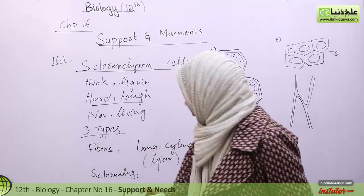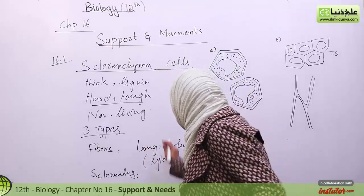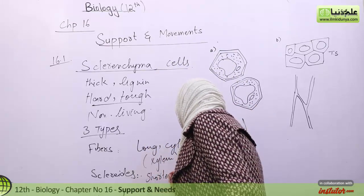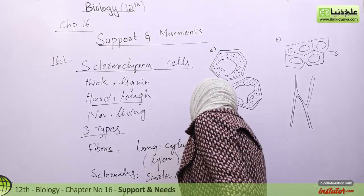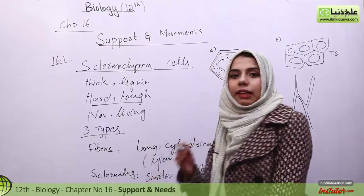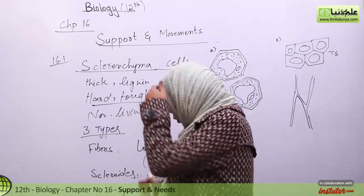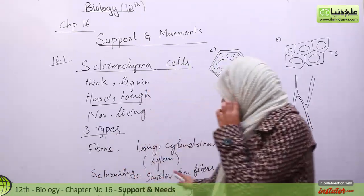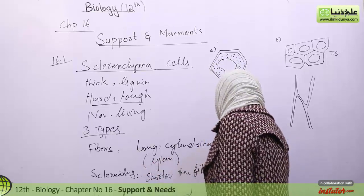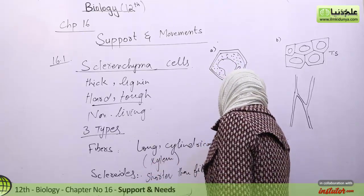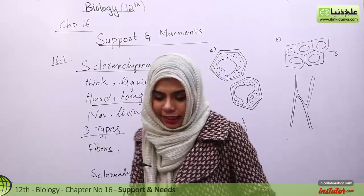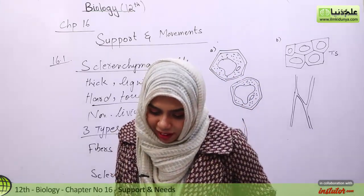If we talk about sclereids, sclereids are shorter than fibers but longer compared to vessels. Sclereids are found in the seed coat — wherever there is a seed coat, you will find sclereids there.